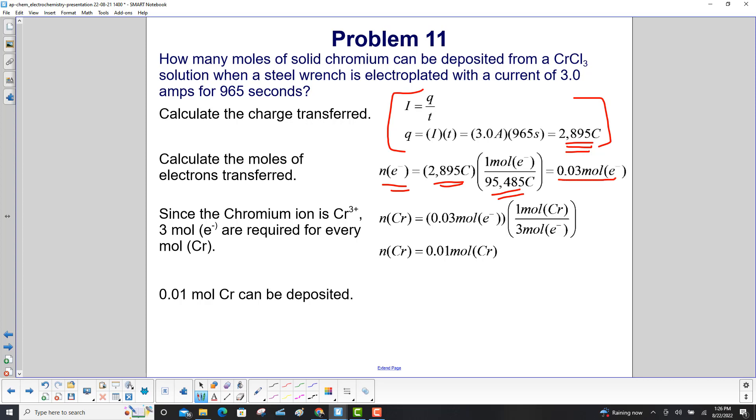Since the chromium ion is Cr³⁺, 3 moles of electrons are required for every mole of chromium. Taking 0.03 moles of electrons times 1 mole Cr per 3 moles of electrons, we get 0.01 moles of chromium can be deposited.